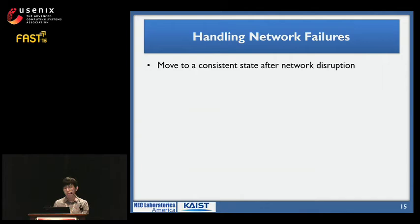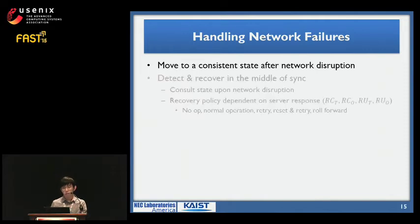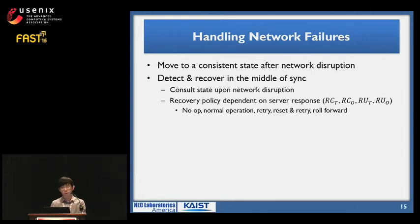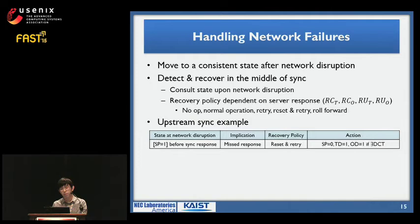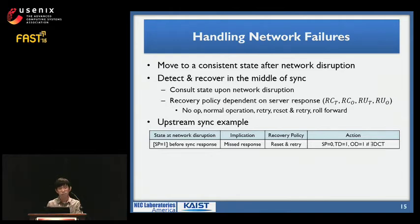Let me explain how Simba recovers from failures. For network disruption, the goal is to return to a consistent state. Simba consults the current state and server responses — such as conflict or update for table or object — to detect and recover. Recovery can take the form of no operation, normal operation, retry, reset-and-retry, or move forward. For an upstream sync case, consider a network disruption after the sync request was sent but before the client received the response. This is a missed response state, which takes the recovery policy of reset-and-retry — resetting all flags to the previous version and restarting the sync process.